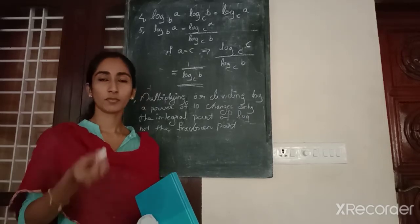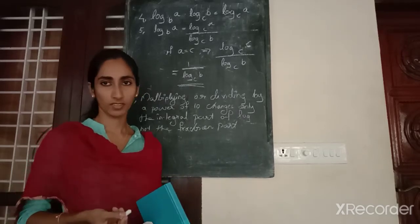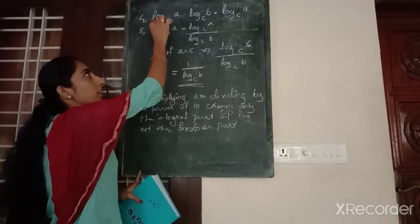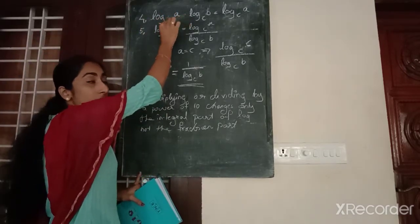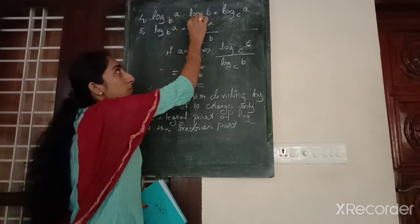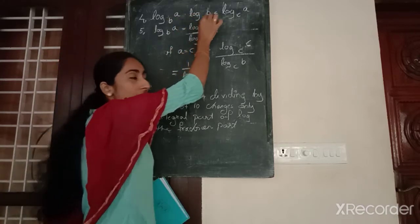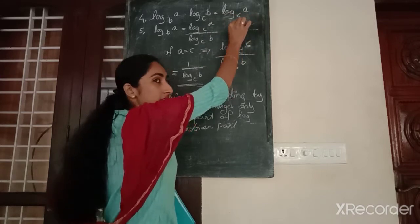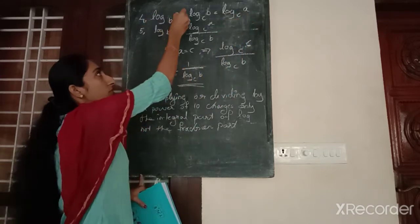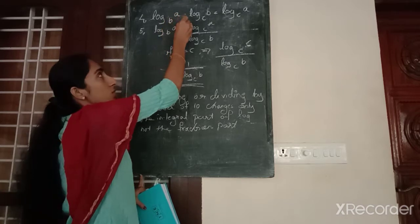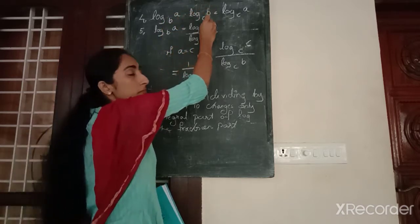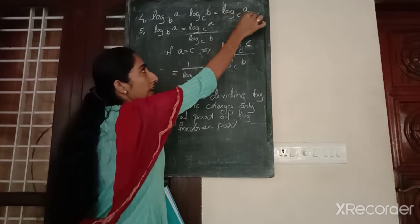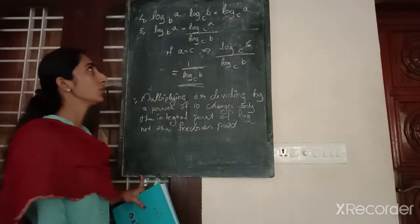Today I am going to take the remaining laws of logarithm. The fourth law: logarithm of A base B into logarithm of B base C is equal to logarithm of A base C.